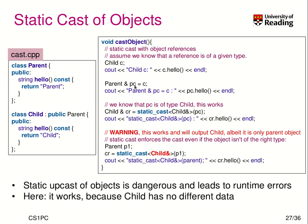Since we know that pc actually refers to a Child object, we can use static_cast to change it from a Parent reference to a Child reference, and then calling hello() prints "child". However, here we see the limitation of static_cast: if we have a plain Parent object p1 and cast it statically to a Child reference, it may appear to work but it is actually unsafe. A parent is not a child — only a child is a parent — so casting a base object to a derived type is incorrect and dangerous.